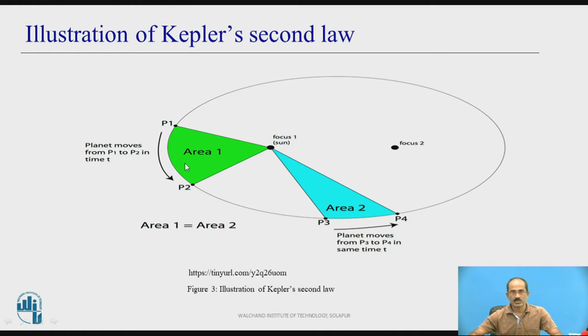Let us see illustration of Kepler's second law. There are two focuses in this ellipse. The sun is at one focus. Planet is revolving in a definite orbit and it follows the elliptical path as per Kepler's first law.